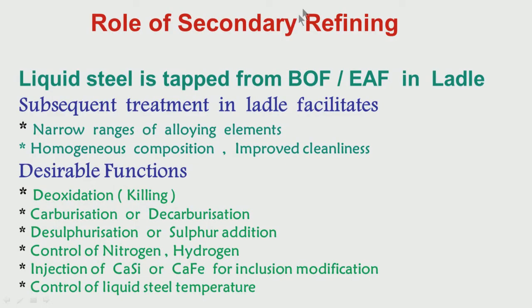In the earlier lecture I was talking about the role of secondary refining in controlling the inclusions and entrapments. I talked about the desirable functions for the secondary refining stages like deoxidation, which I have covered, then desulfurization I have covered, control of gaseous elements like nitrogen and hydrogen I have covered, then injection of calcium in the form of CaSi — how it helps in inclusion modification, what are the limitations, what precautions one has to take, and the importance of controlling the liquid steel temperature for getting the desirable quality.